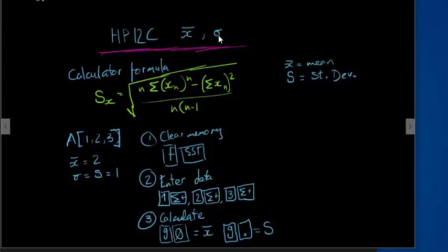The formula for the standard deviation is Sx equals the square root of the total number times the sum of each x to the power n minus